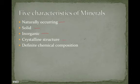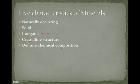It has to have a crystalline structure. A crystal is just a geometric shape in which the atoms arrange themselves — we'll talk about more of that later. Minerals also need a definite chemical composition, which means they are made up of the same chemicals each time, whereas rocks can vary. So those are five characteristics all minerals must have — you need to know these.